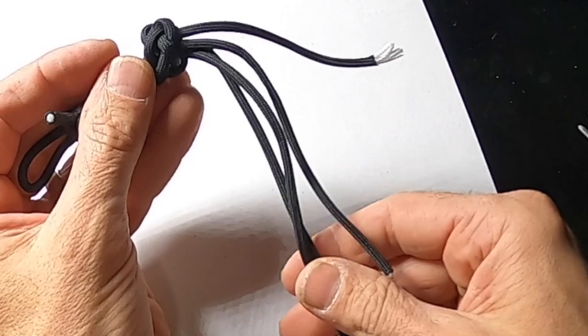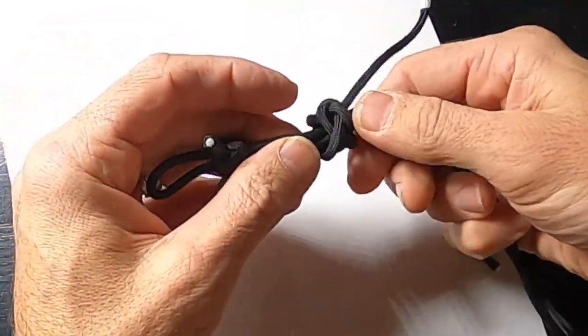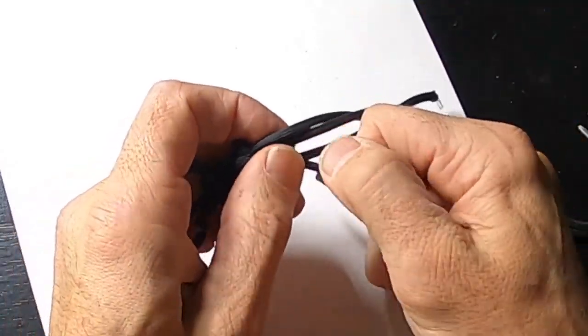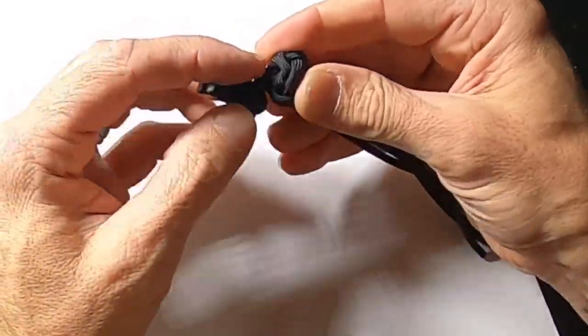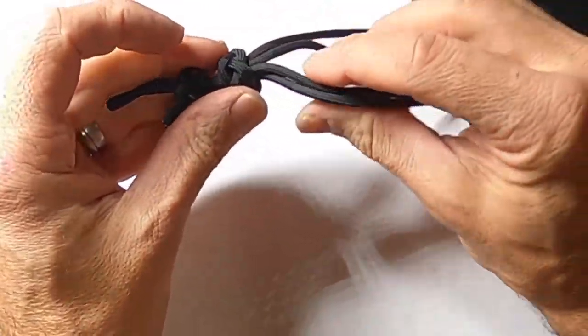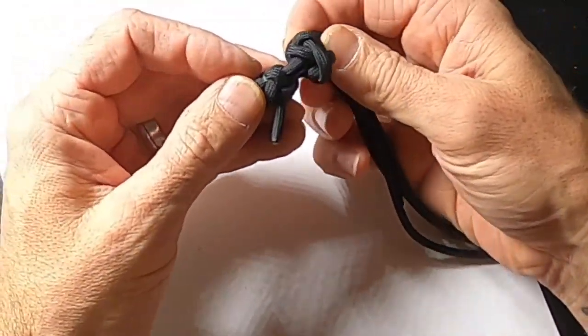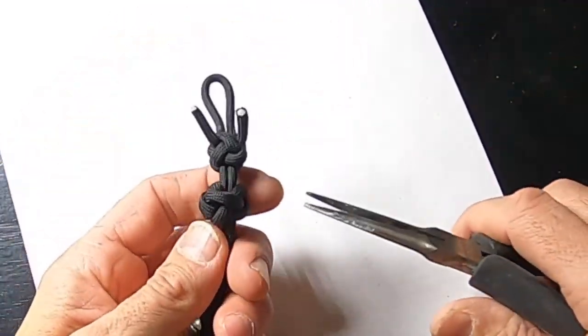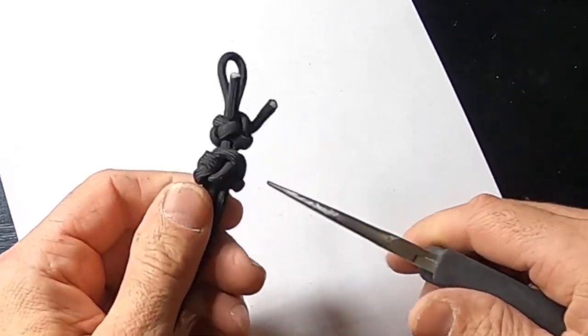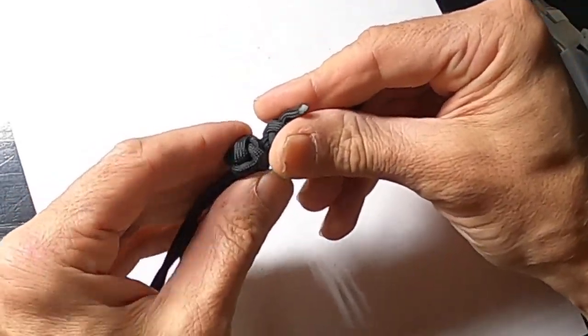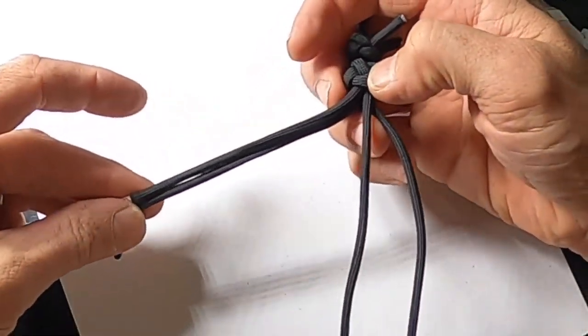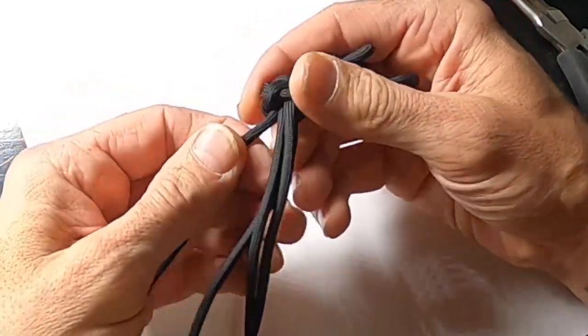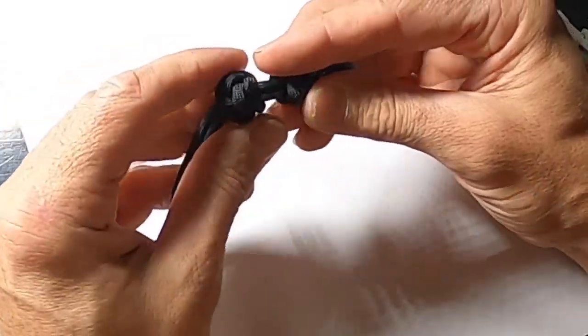Before I tighten this up, these are going to be the feet. I don't want those on the top, I want them on the bottom. Now I'm going to tighten it up. The tricky part is you have to feed it through from one side and push it all the way through. That's where the pliers come into play because I'm going to twist it and pull it through. Then I'm going to have a knot and tie these into feet.